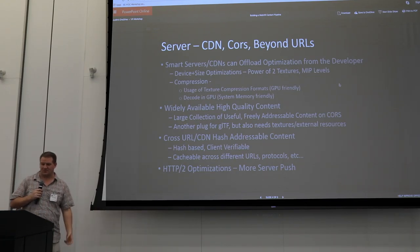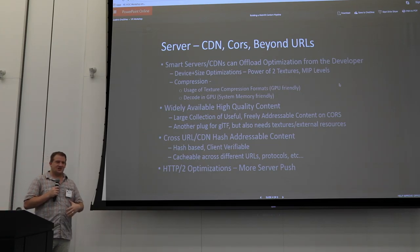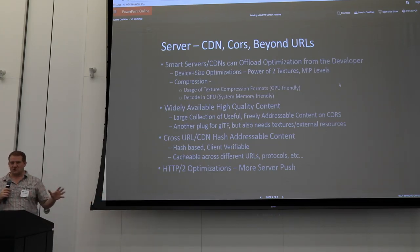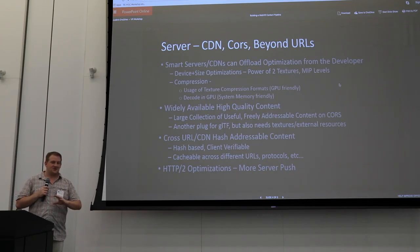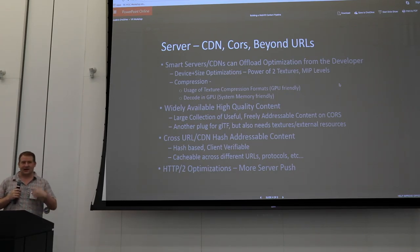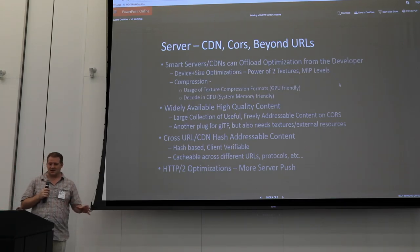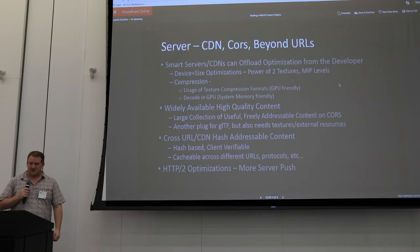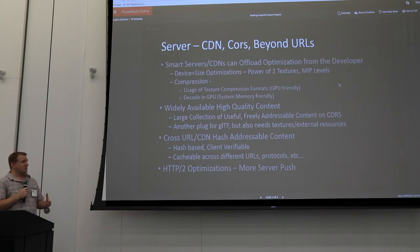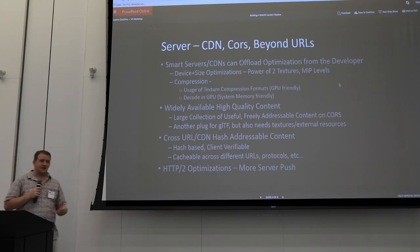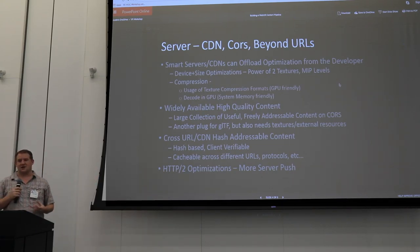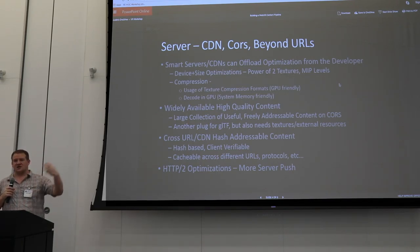We need to move away from JPEG and PNG. We also need some widely available, high-quality content with CORS — I want somebody to put a whole bunch of free, fast textures and models online that I can access with CORS so I can mash them into any website. There's also a new concept: cross-URL or CDN hash-addressable content. If I go to your CDN and somebody else's CDN for the same asset, I download it twice into cache. Is there a way to detect that on the client, or send up enough information to know I've already got that asset?